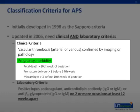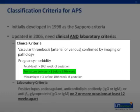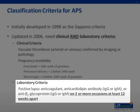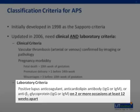For pregnancy morbidity, a patient can fit one of three clinical scenarios. The first is fetal death beyond 10 weeks of gestation. Second is one or more premature births before the 34th week of gestation because of eclampsia or severe preeclampsia. Third is three or more unexplained consecutive miscarriages before the 10th week of gestation. In addition to a thrombosis or pregnancy complication, a patient must meet laboratory criteria: a lupus anticoagulant or anticardiolipin IgG or IgM at 40 international units or higher, or anti-beta-2-glycoprotein-1 antibody on two or more occasions at least 12 weeks apart. The importance is that the antibodies are persistent.